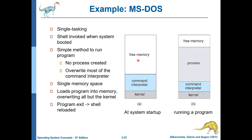Now we will study some example operating systems. The first is Microsoft DOS, which was prevalent in the early 80s through the 90s. DOS stands for Disk Operating System. It is a single-tasking operating system, meaning only one program can be executed at a time. When you load a program, you cannot execute any other program — you must finish it first, then the control returns to the operating system.